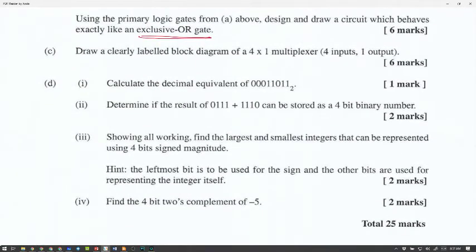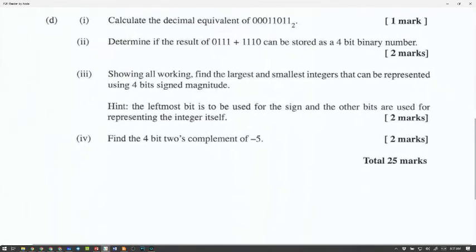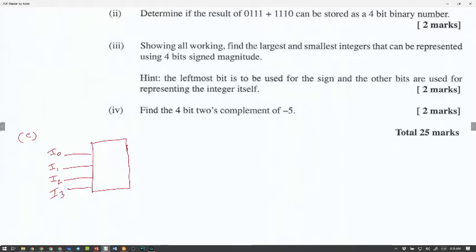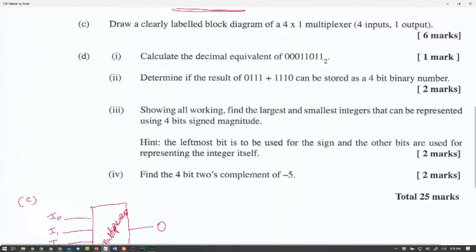Next one is draw a clearly labeled block diagram of a 4 to 1 multiplexer. Four inputs, one output. This will be I0, I1, I2, and I3. Because you have four inputs. And then you have your output. In order for the four inputs to be able to be selected, you need to have a S0 and a S1. And this is the multiplexer. Six marks.